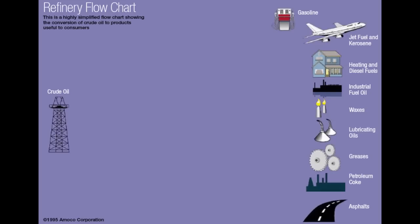Here we will build a simple refinery flowchart. On the left you see the crude oil feed to the refinery. On the right-hand side are the major refinery products, going from the lightest to the heaviest, starting with gasoline.